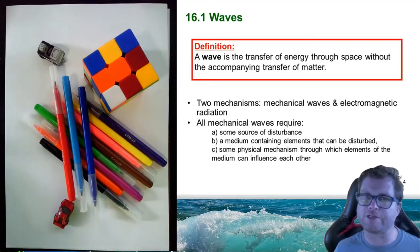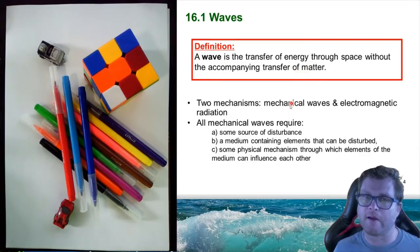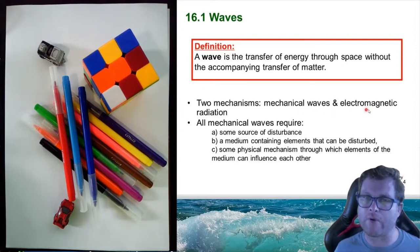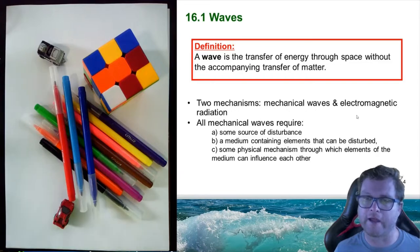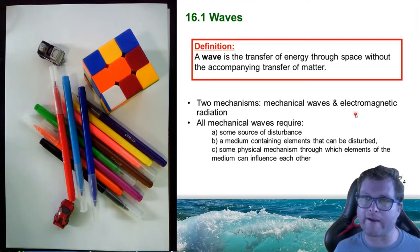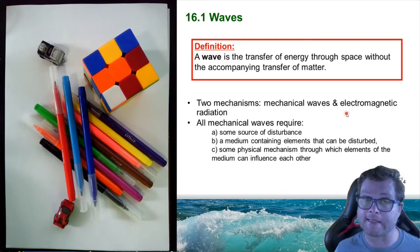Moving on to the definition of waves: a wave is the transfer of energy through space without the accompanying transfer of matter. You get two different mechanisms whereby waves can propagate. The first is a mechanical wave and the second is electromagnetic radiation. A mechanical wave refers to some mechanical process, such as a wave on a string or an ocean wave — those would be examples of mechanical waves. Electromagnetic waves include cell phone signals or light.